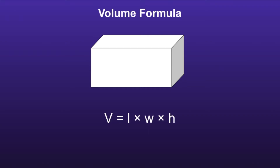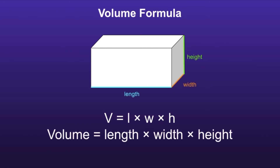Volume Formula. The formula to find the volume of a rectangular prism is V equals L times W times H, which means volume is equal to the length times the width times the height.